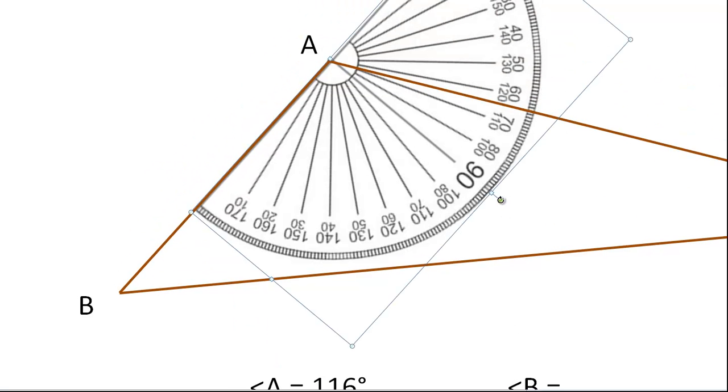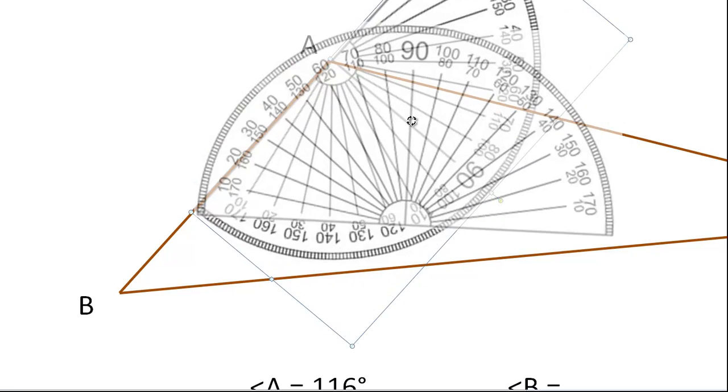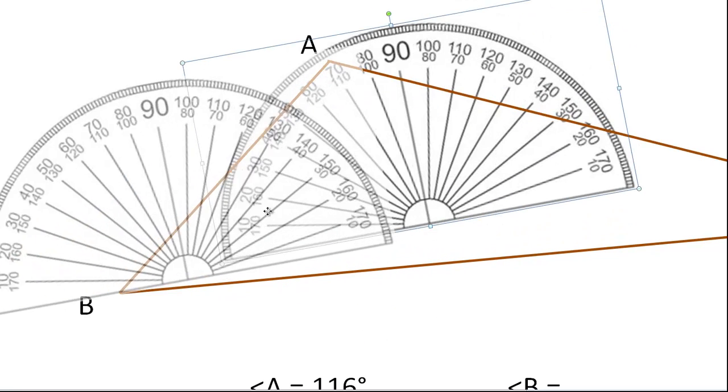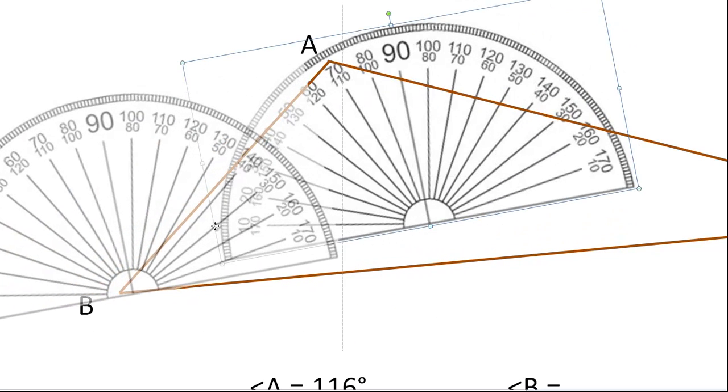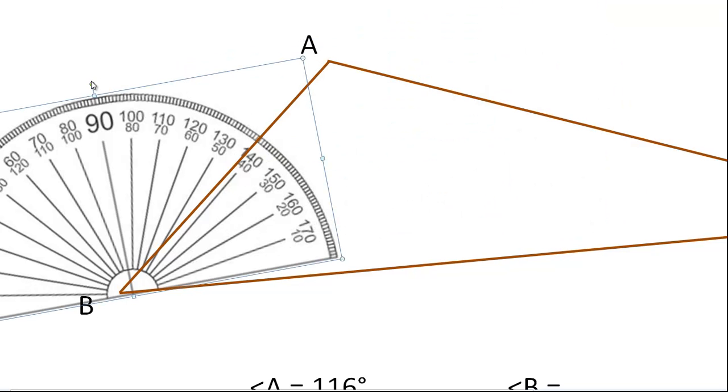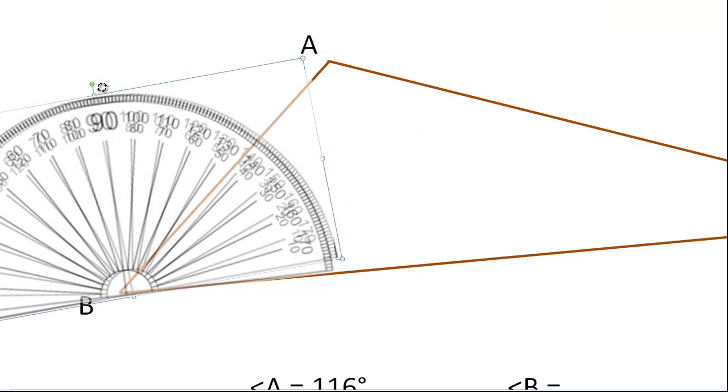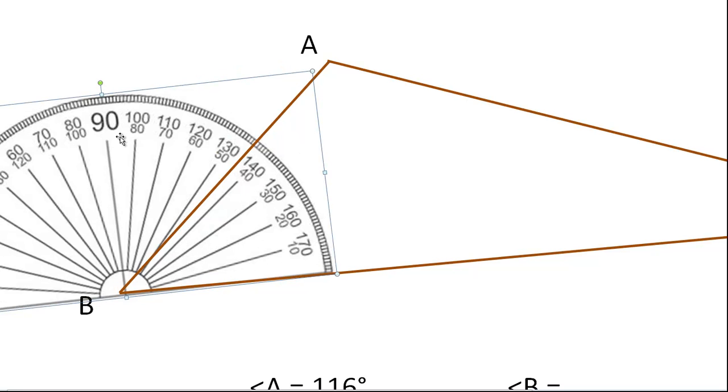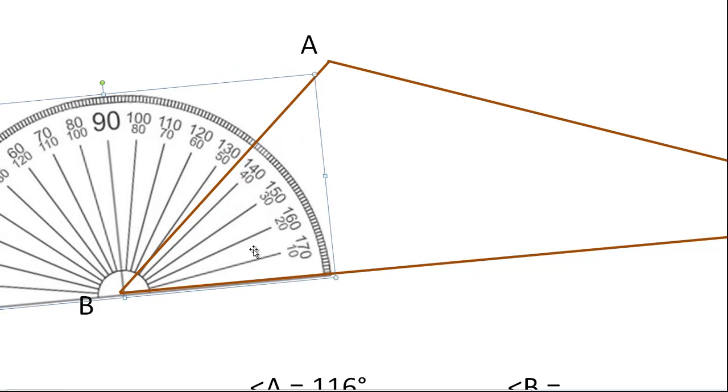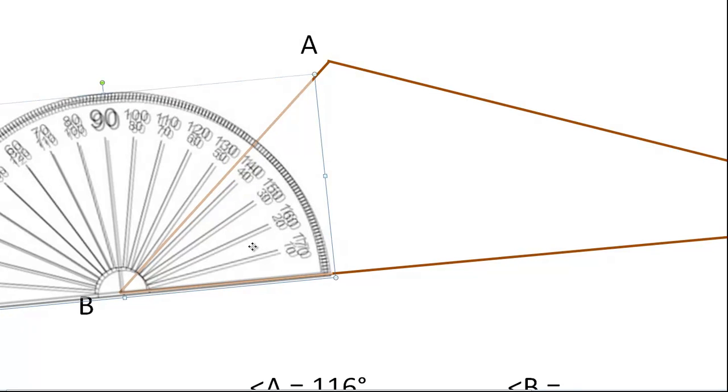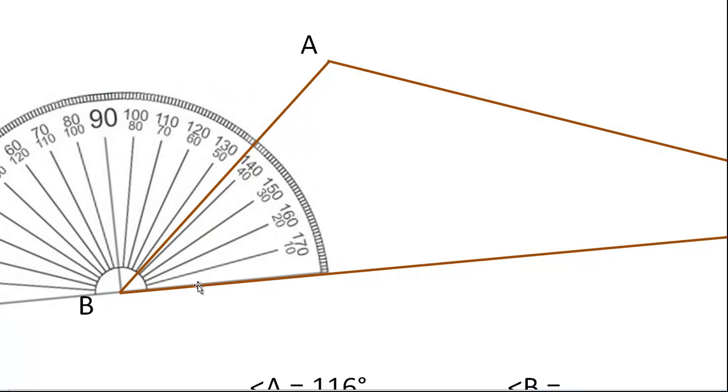Now angle B. So I need to rotate this quite a bit around this way. Because I'm doing angle B. So that's pretty close. So angle B. So I've got my zero on this side here. So I'm using the inside scale here. So it's between the 40 and the 50.